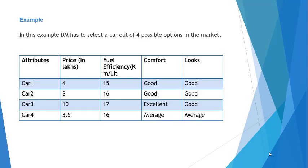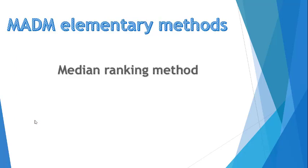Let's take this example in which the decision maker is looking for a car out of four possible options under different attributes. The attributes are price, fuel efficiency, comfort, and looks. The car options available in the market for the decision maker are Car 1, Car 2, Car 3, and Car 4. We will see how this example is solved with the median ranking method.